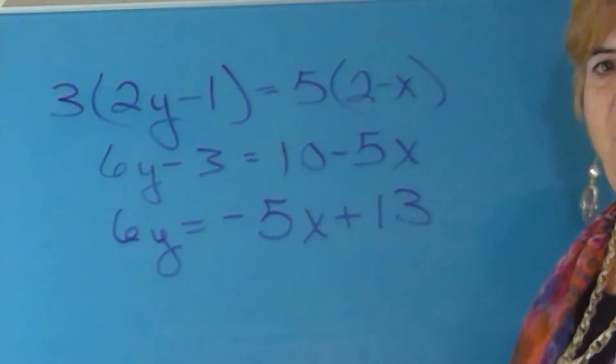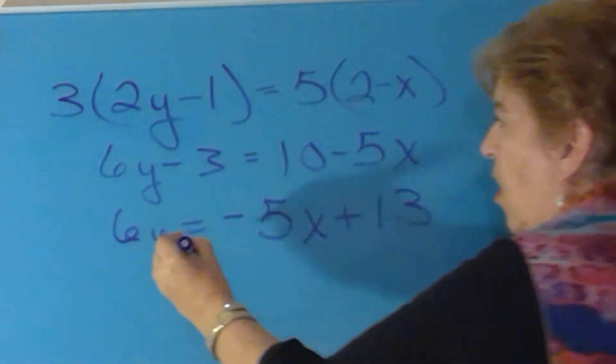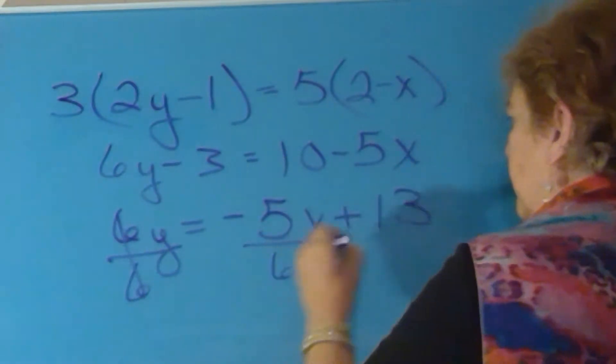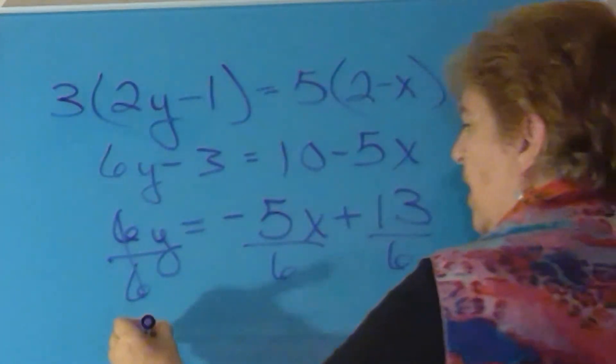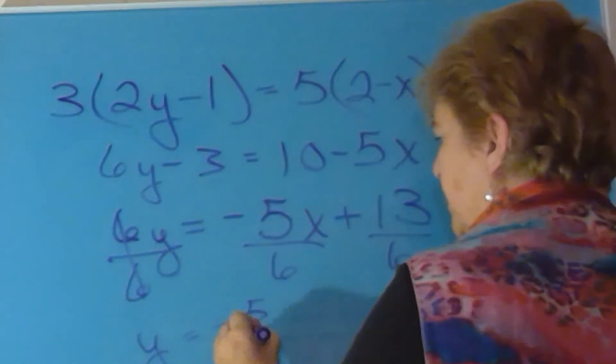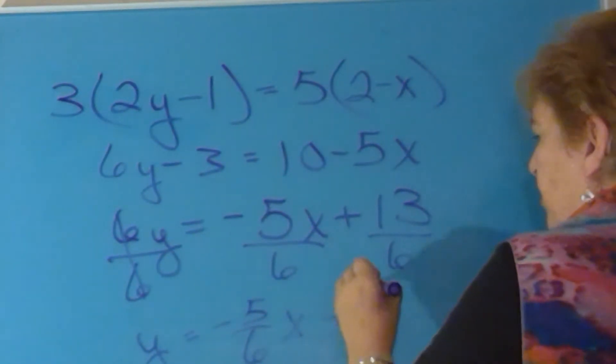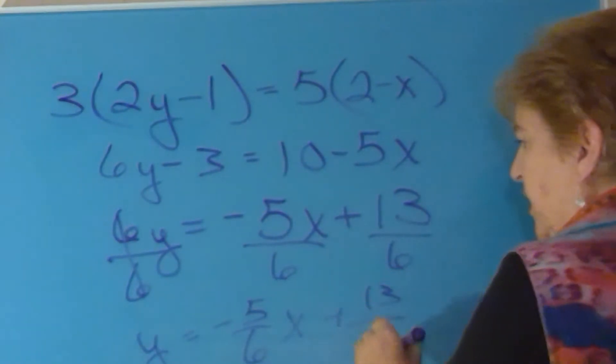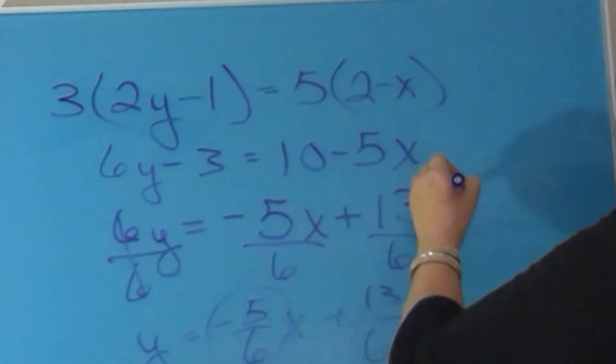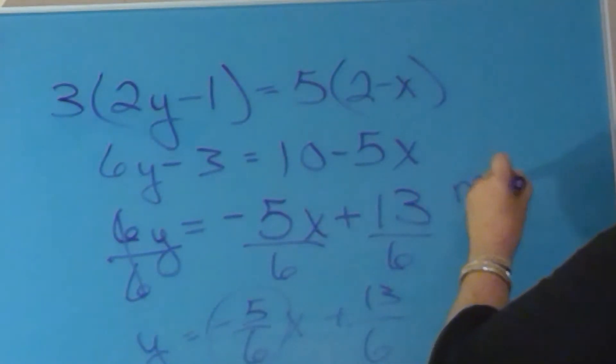Now, to get the y totally by itself, all you need to do is divide by the six. You end up with y equals negative five sixths x plus 13 over six. Your slope is negative five sixths.